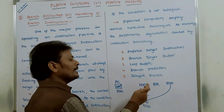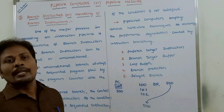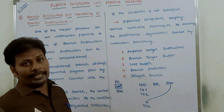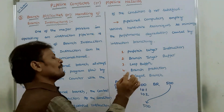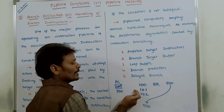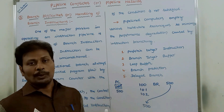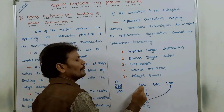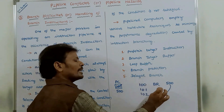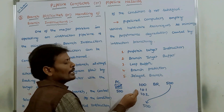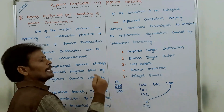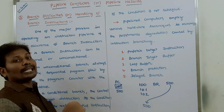In the case of a conditional branch instruction, if the condition is satisfied, the program control is transferred from address 100 to 500. If the condition is not satisfied, the program control continues with the next instruction at address 101. So these are the two types of branch instructions: unconditional branch and conditional branch.